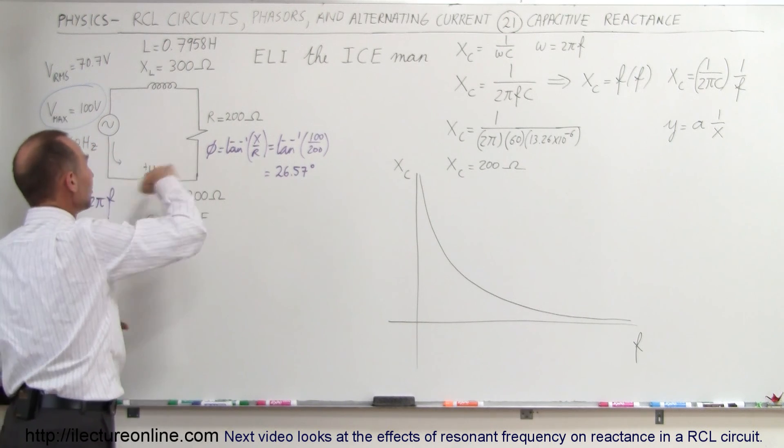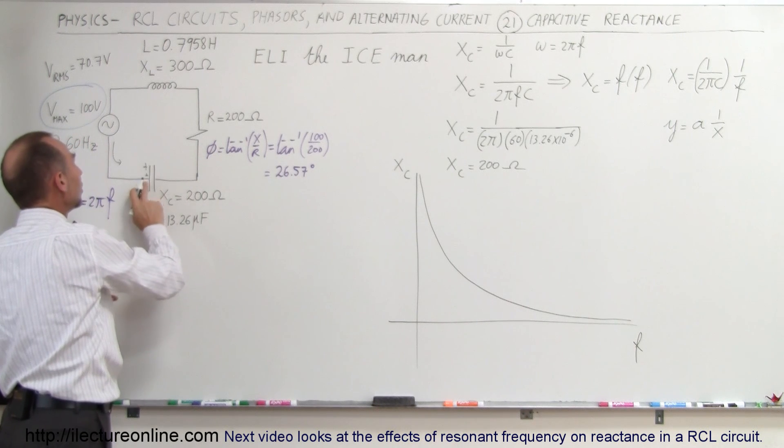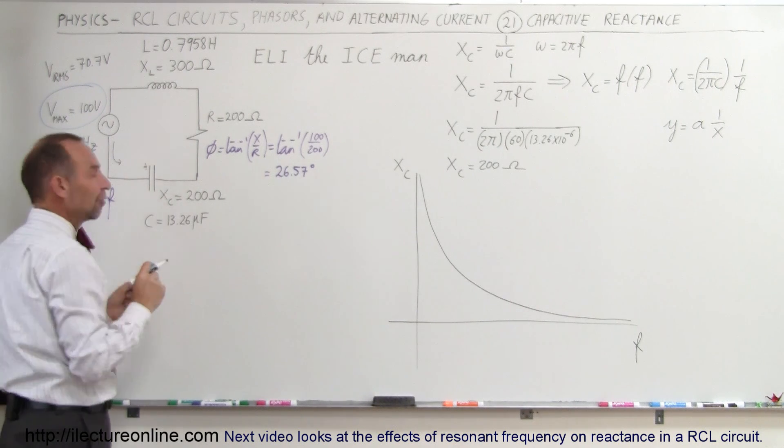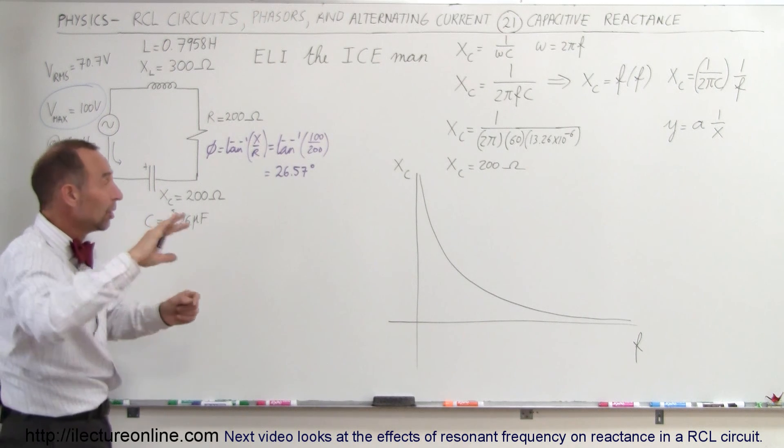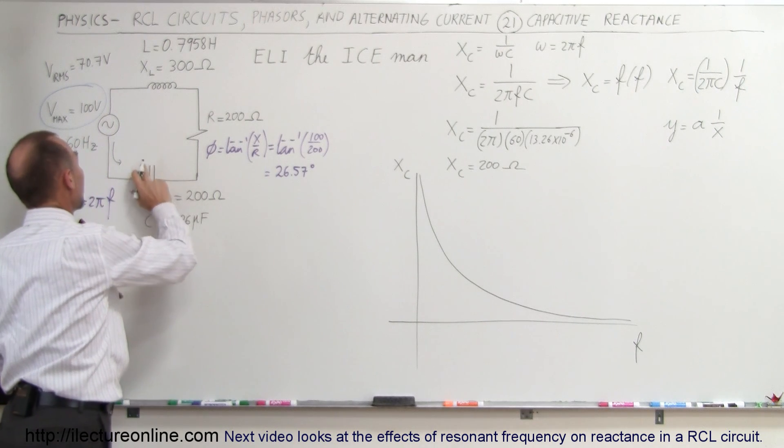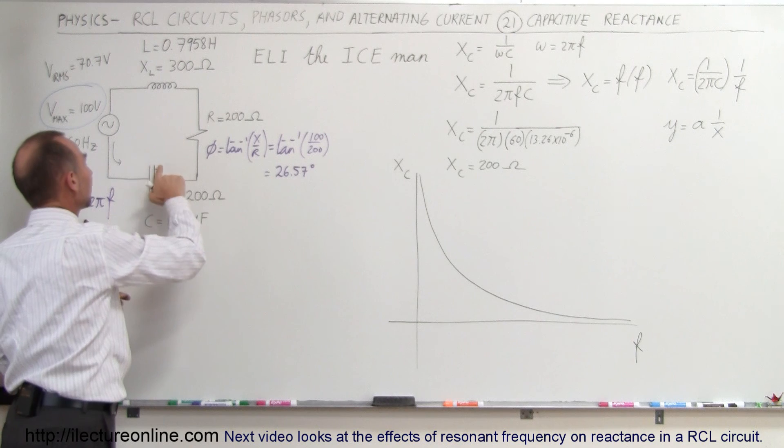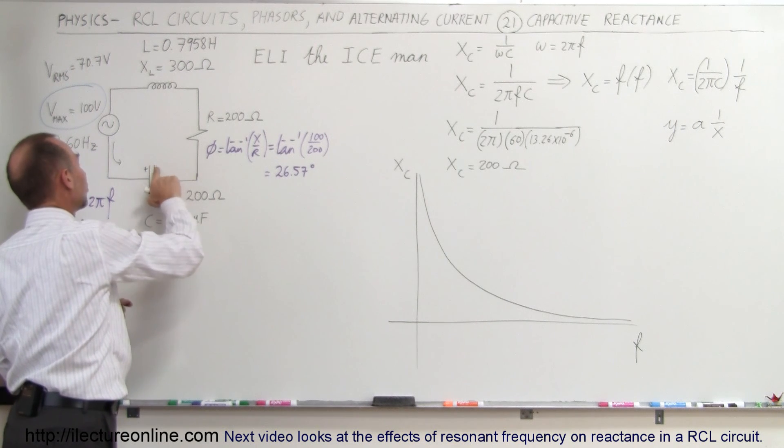But if the current switches back and forth really quickly, not many charges can pile up on the capacitor. Before the capacitor can fill up, the current reverses direction. Charges build up on one side, then the other, and so on.